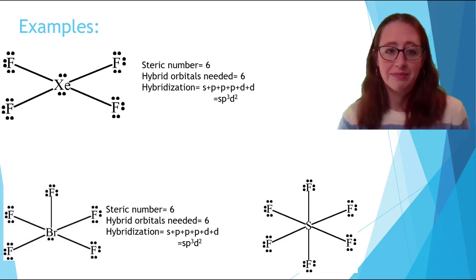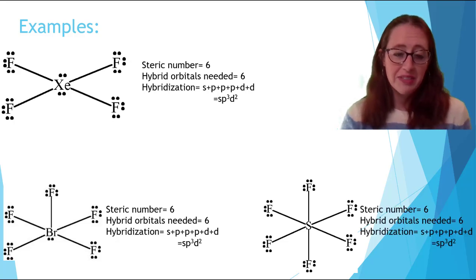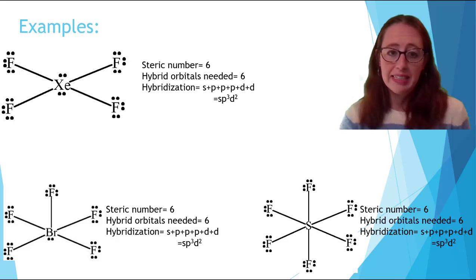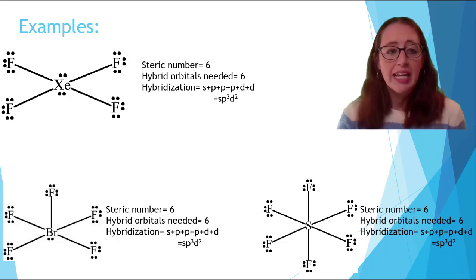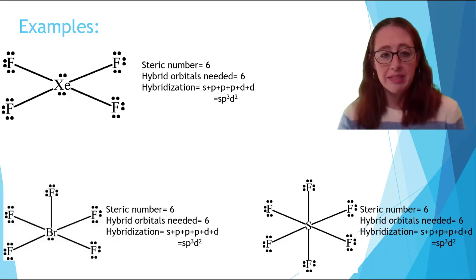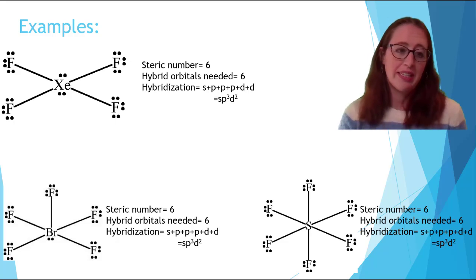Let's do one more. Here we have SF6. Again, steric number of six. So even though there's no lone pairs, now we have six bonded atoms. And so our hybrid orbitals needed is six. This leaves us with SP3D2. And so here you can see three examples where in all cases we had SP3D2, even though their geometries are quite a bit different in terms of molecular geometry. So they all have an octahedral electron geometry. They all have a steric number of six, and that's what gives the hybridization.